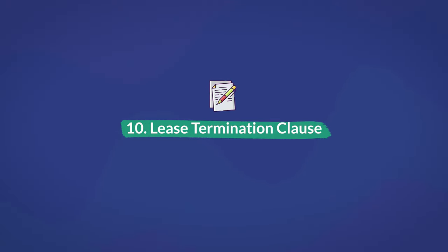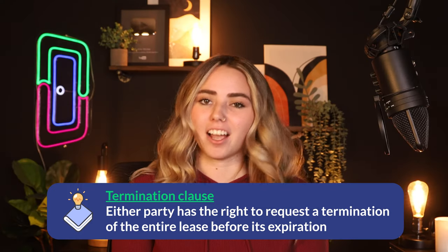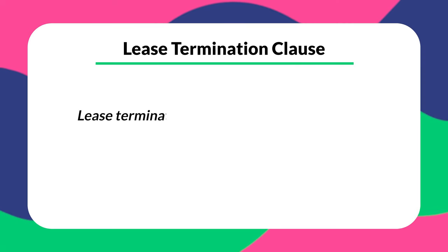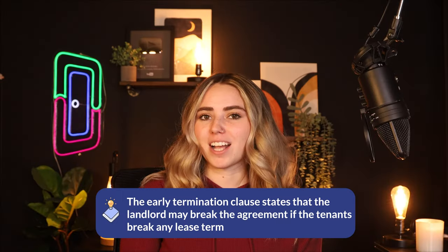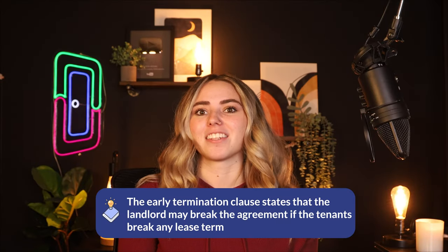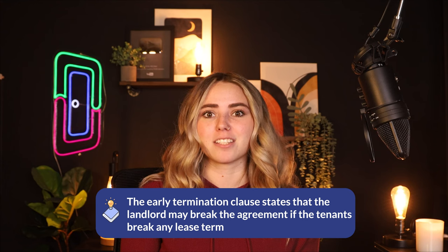Number ten is the lease termination clause. In a termination clause, either party has the right to request a termination of the entire lease before its expiration. The difference between an early termination clause and the lease termination clause is that the latter shows mutual written consent between the landlord and the tenant. In contrast, the early termination clause states that the landlord may break the agreement if the tenants breach any lease term. In general, the landlord releases the tenant from any future obligations and the tenant surrenders the premises. Keep in mind that the landlord may still charge an extra rent amount or fee for early termination.